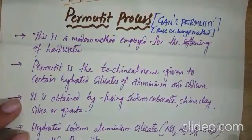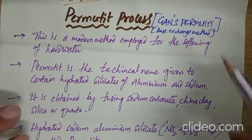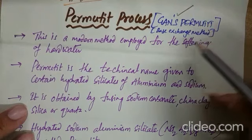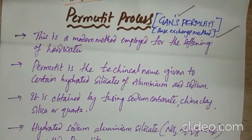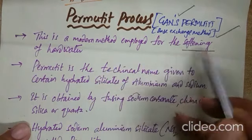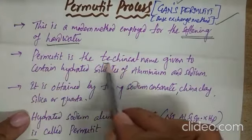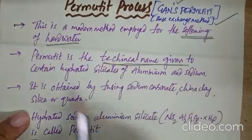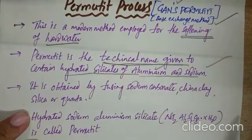Now let us discuss one of the most important methods — the Permutite Process, also called the Gantz Permutite Process, also the Base Exchange Method. These are the other names. This is a modern method for softening water. Permutite is the technical name given to certain hydrated silicates of aluminum and sodium.